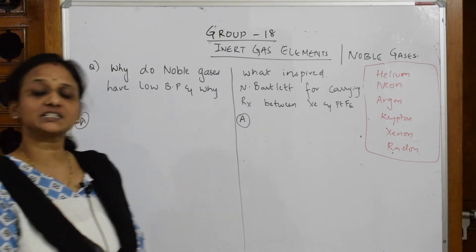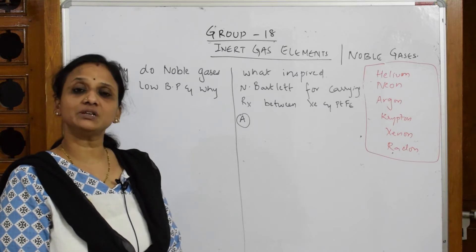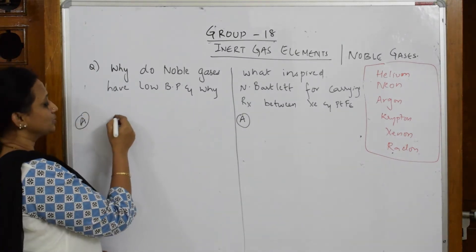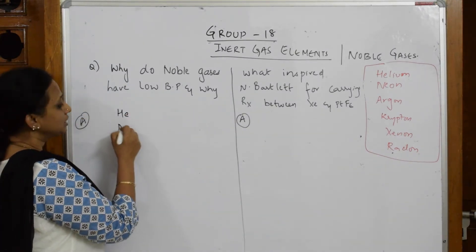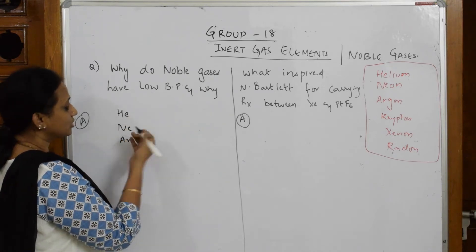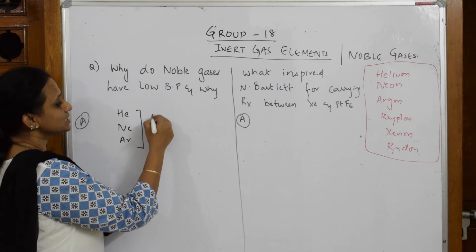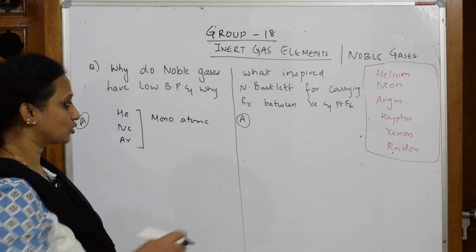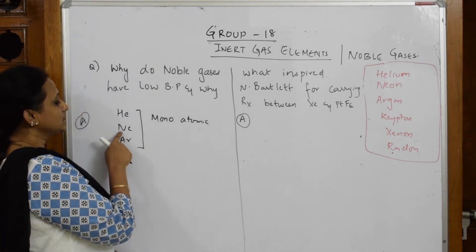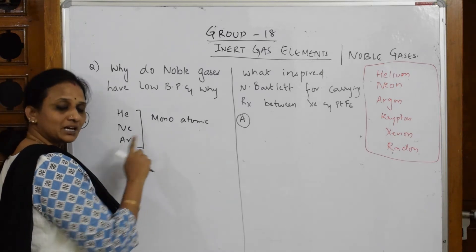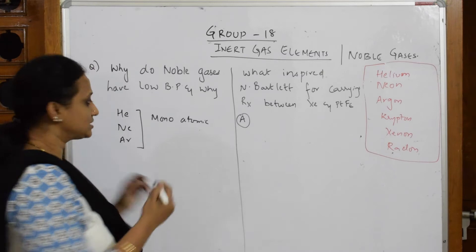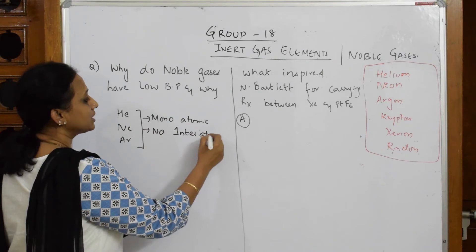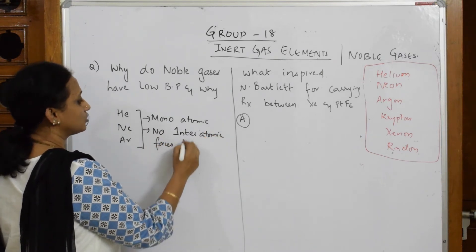We've already studied that helium has the minimum boiling point among noble gases. First, when I look at the formulas: helium is monatomic, neon is monatomic, argon is monatomic. So noble gases are monatomic in nature — they don't exist as diatomic molecules like halogens such as chlorine, bromine, or iodine. So all are single atoms.